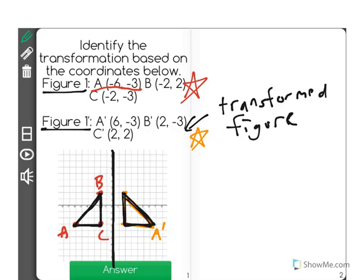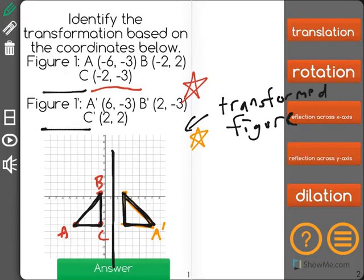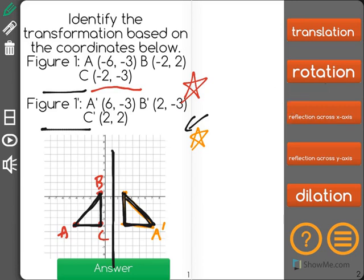We could either have a translation, which I'm going to go ahead and erase this just to go over what these are one more time. A translation is when we have a shape, and that shape just moves to a different location. That's not what happened here. We could have a rotation, where we had a shape, and it's turned on its side, not here.